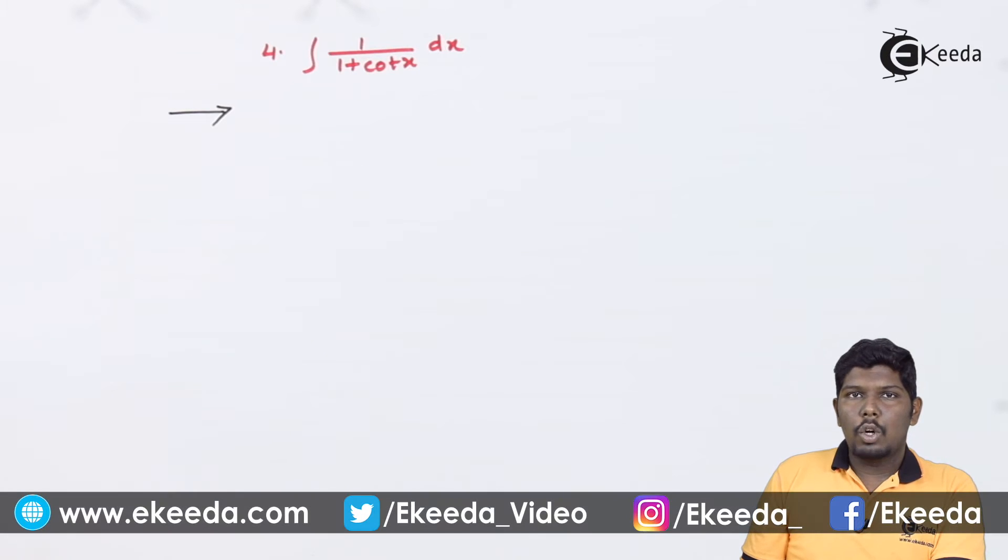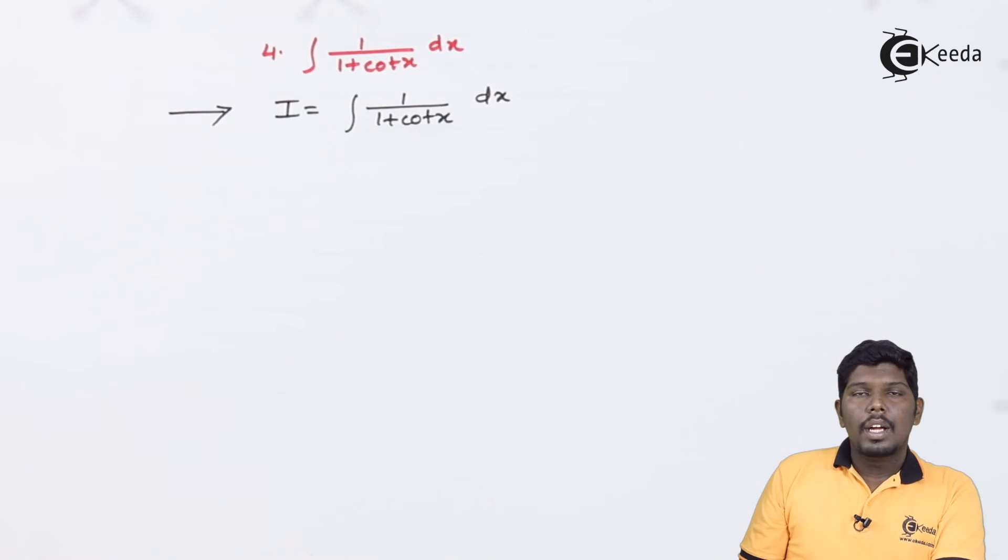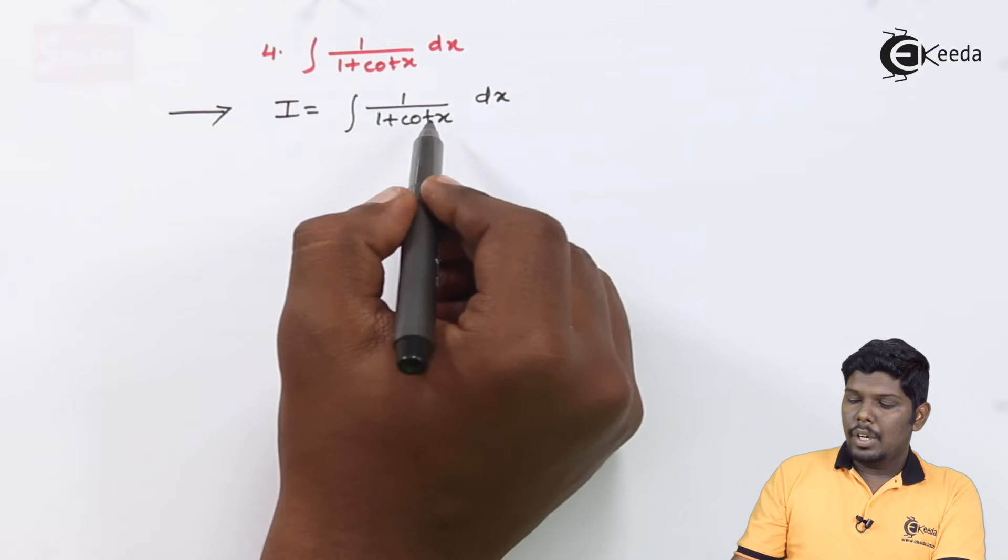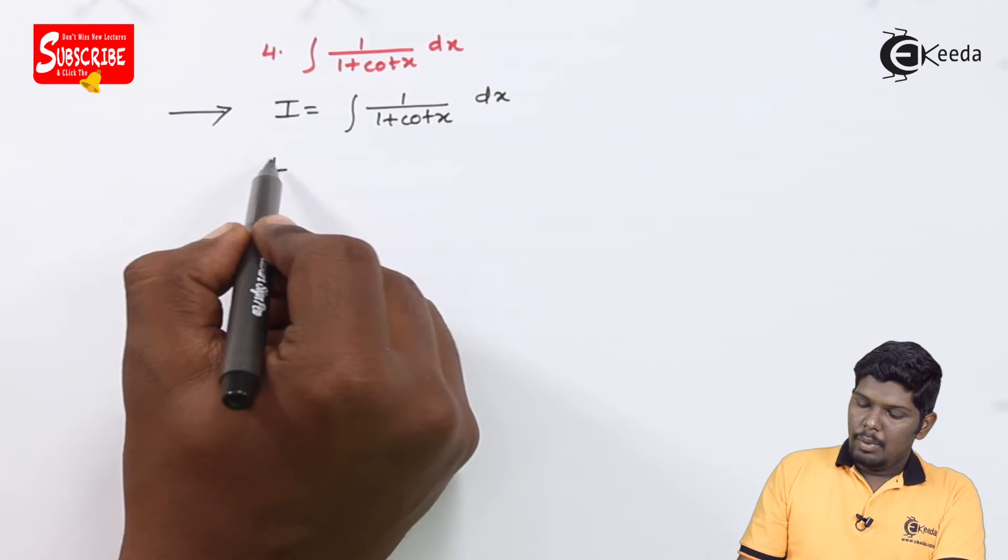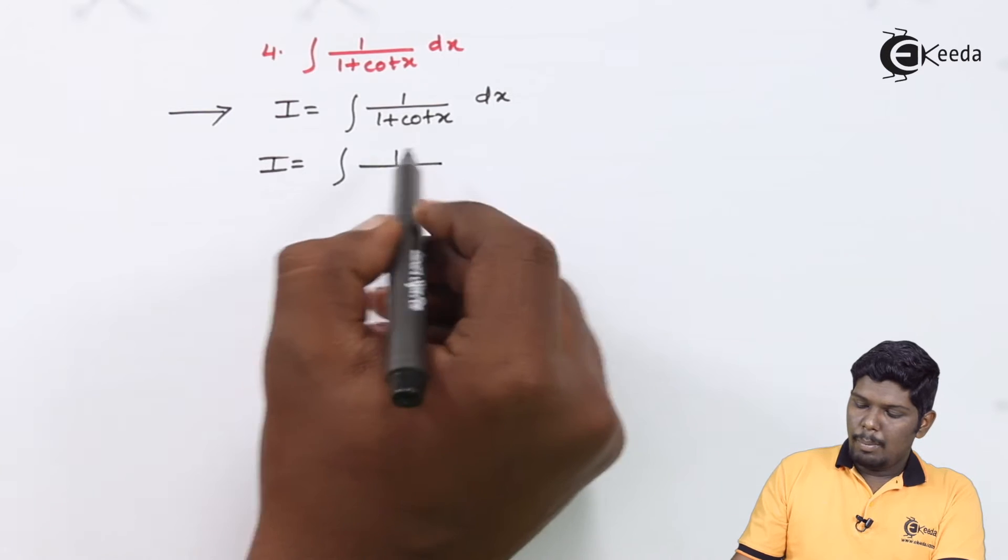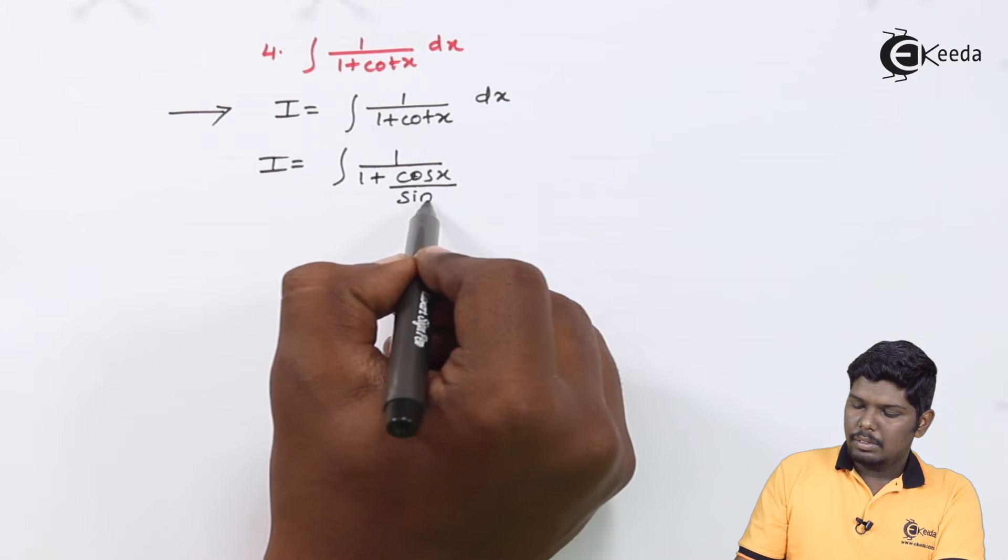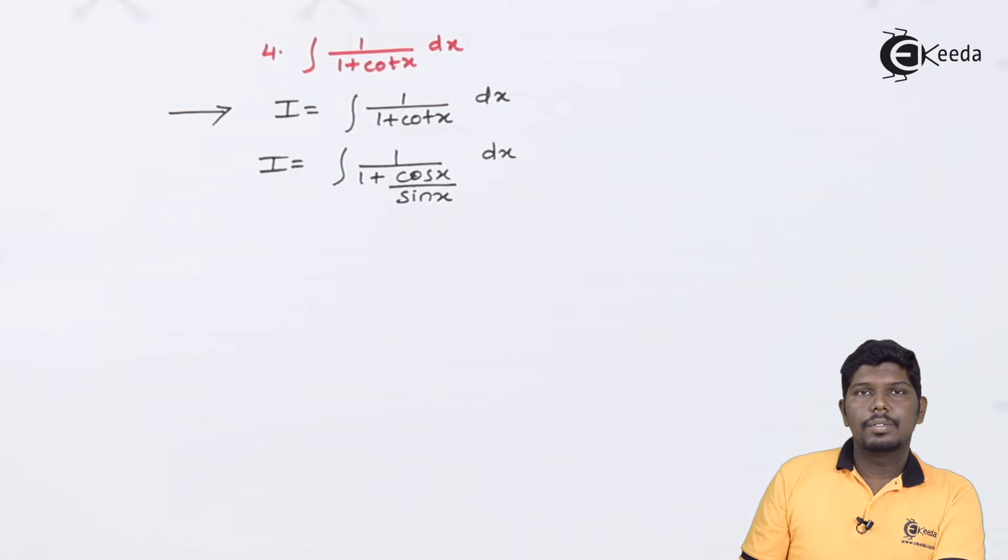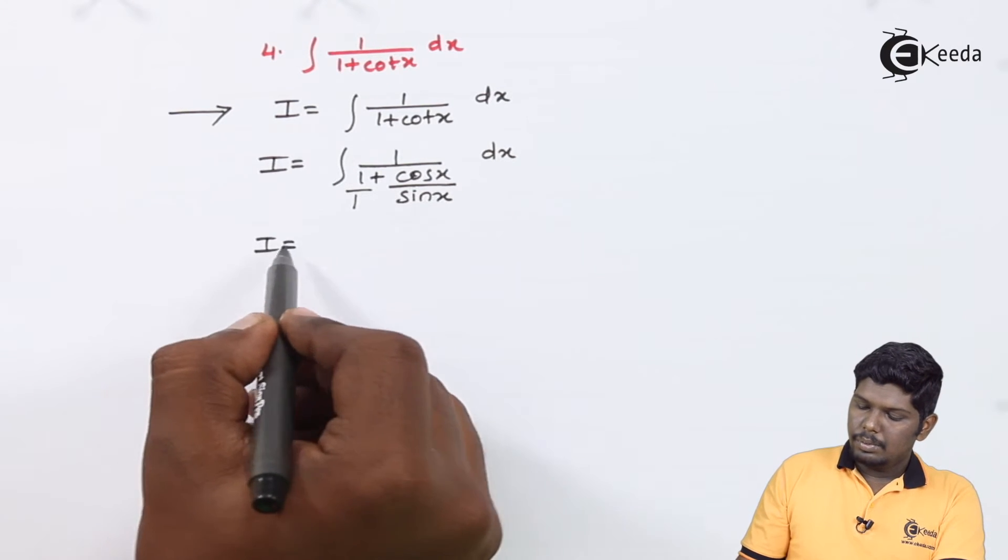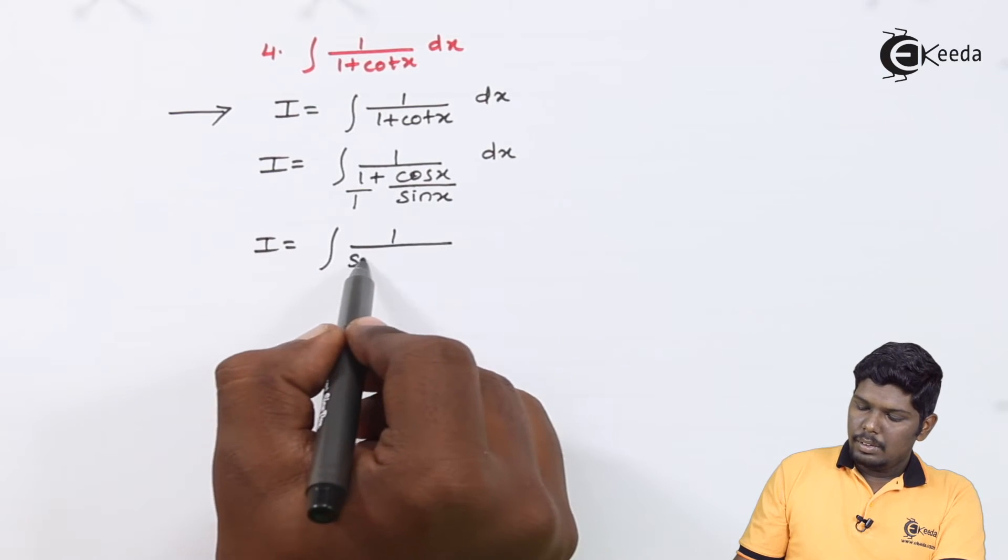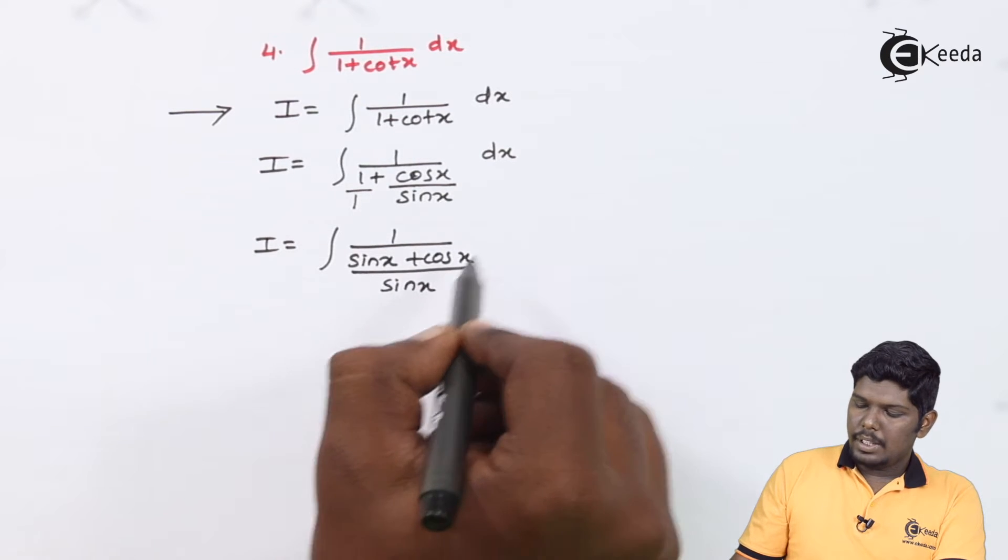Integral 1 upon 1 plus cot x dx. Here the first step that we can do is convert cot x in basic trigonometric ratios that is sin x and cos x. That will give you 1 upon 1 plus cos x upon sin x dx. If you solve these two fractions, that will give you 1 upon sin x plus cos x upon sin x.